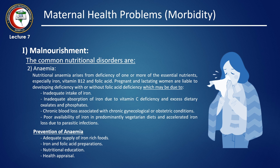Prevention of anemia: First, adequate supply of iron-rich foods for pregnant and lactating women. Second, iron and folic acid preparations, which should be given in the second and third trimesters of pregnancy and during lactation. Thirdly, nutritional education regarding iron requirements and good sources of iron. Lastly, health appraisal for detection and management of anemia.